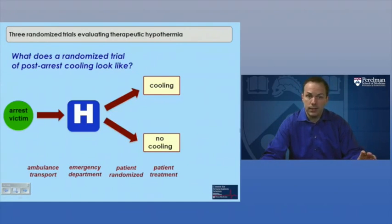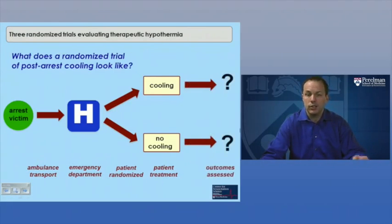So in the studies that I will share with you, victims were randomized to cooling or no cooling, and then outcomes were assessed. So patients were cared for in the hospital, and at the end, the question was how many patients survived and how well did they survive in each of these groups or arms of the study. Okay, so that's what a randomized trial of post-arrest cooling looks like.